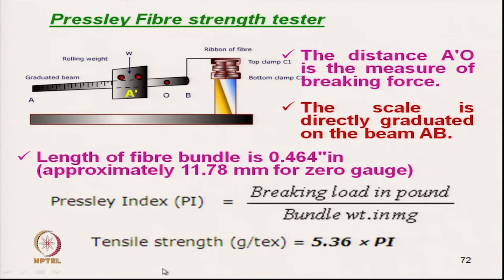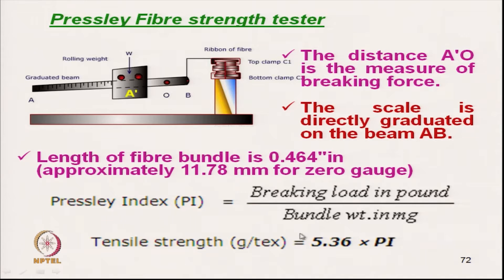The Presley index is the breaking load in pounds divided by the bundle mass in milligrams. So the Presley index equals x pounds over y milligrams. This is gauged directly in terms of Presley index. We can convert the Presley index into tensile strength in grams per tex by multiplying by 5.36. Both the Presley index and tensile strength in grams per tex represent the tenacity of the fiber bundle, with the relationship factor being 5.36.